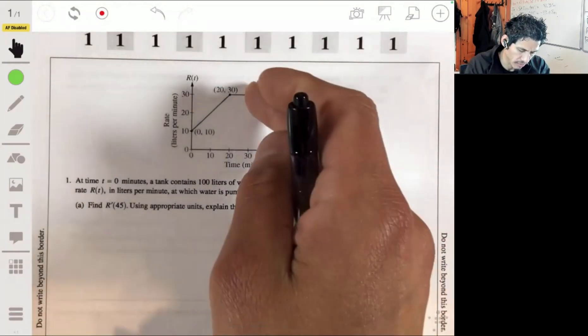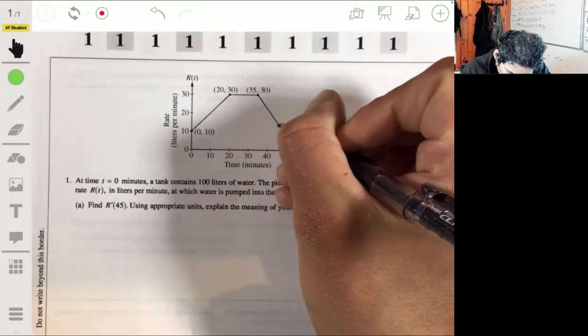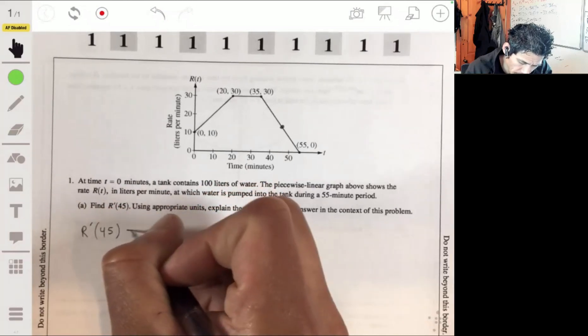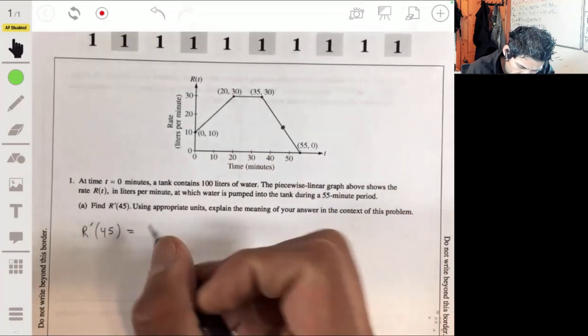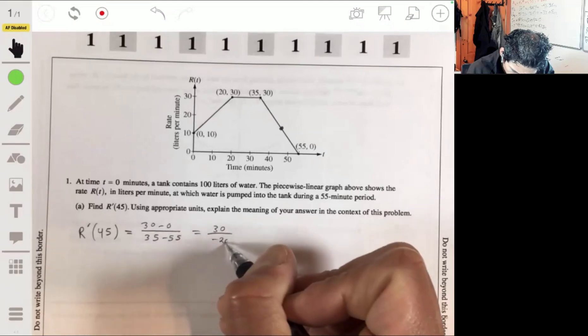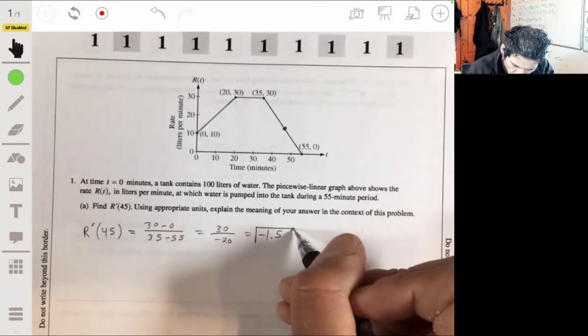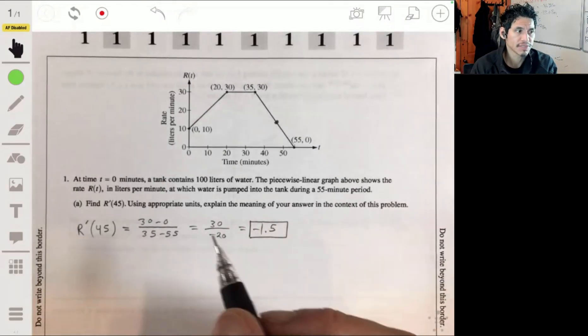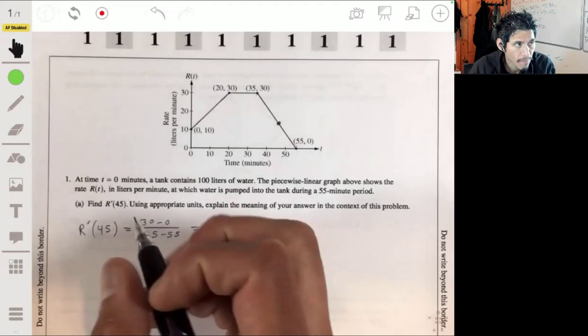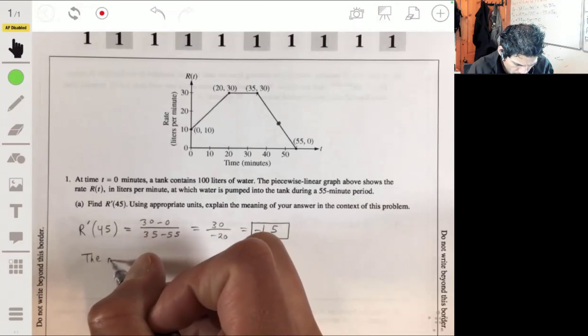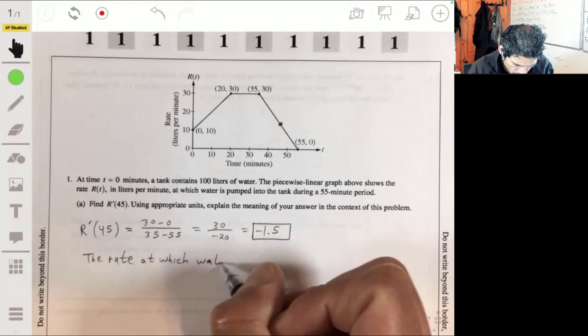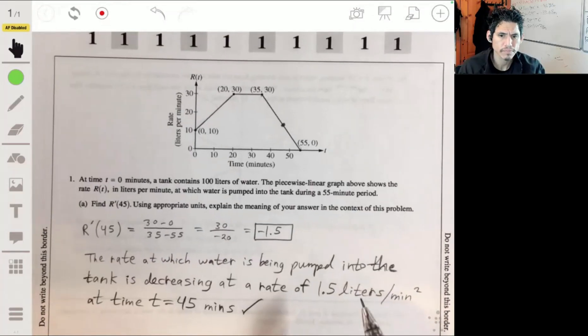So we just look at the slope of this graph at 45 minutes, which is right between here. It's a linear graph. Let's just go old school with the slope equation: y2 minus y1 over x2 minus x1. So 30 minus 0 over 35 minus 55, 30 over negative 20, negative 1.5. So what this is saying is that the rate at which water is being pumped into the tank is decreasing at 1.5 liters per minute squared at time t equals 45 minutes.